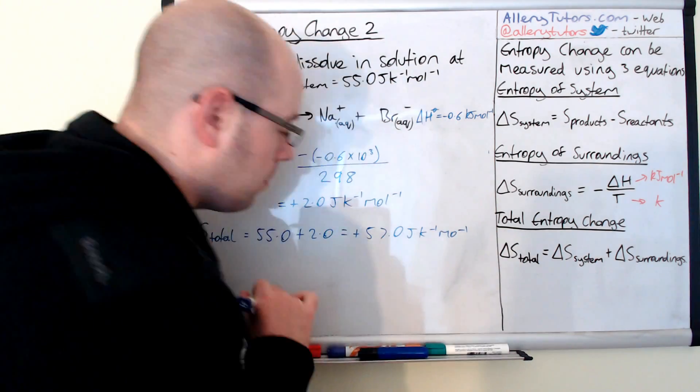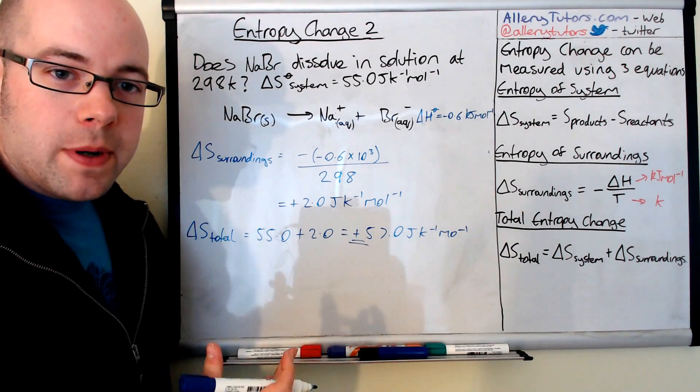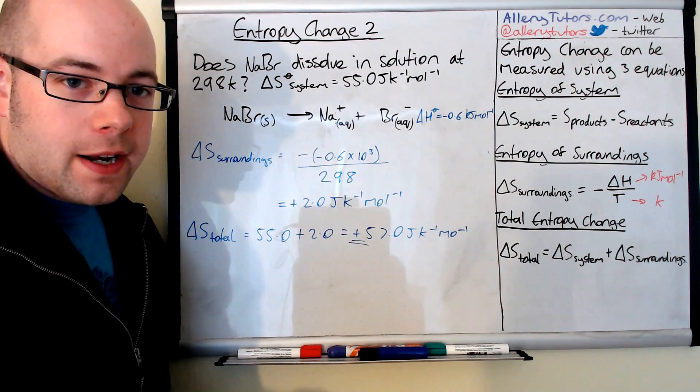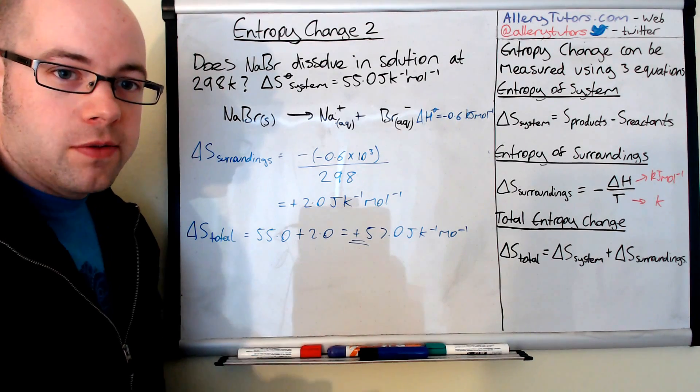Now what this tells us is that because this value is positive, then this is entropically favorable. So at 298 Kelvin, this sodium bromide will dissolve in solution.